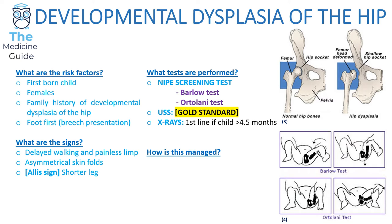Please refer to the pictures in the bottom right-hand corner for further clarification. Ultrasound screening is the gold standard test for developmental dysplasia of the hip. X-rays are considered first-line if the child is above four and a half months of age. In terms of management, we offer children a Pavlik harness initially, and then combined femoral and pelvic osteotomies are performed for older children.